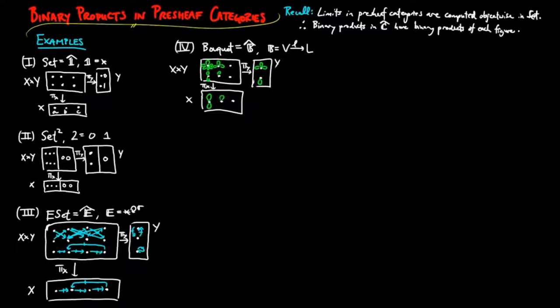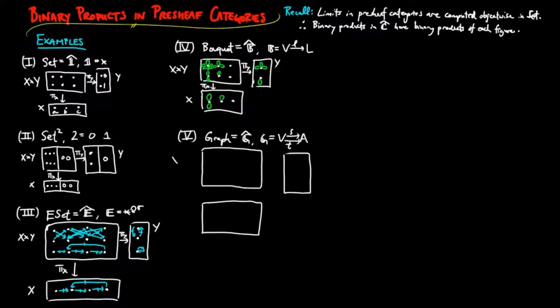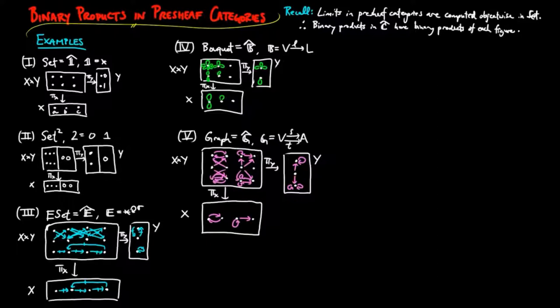The projections should look like vertical and horizontal contractions. For the category of graphs, given a graph X with four vertices and four arcs, and a graph Y with three vertices and five arcs, we obtain the product of X and Y with 12 — four times three — vertices and 20 — four times five — arcs, where the source and target boundaries of the arcs are taken in each component of X and Y. Projections again are vertical and horizontal contractions.